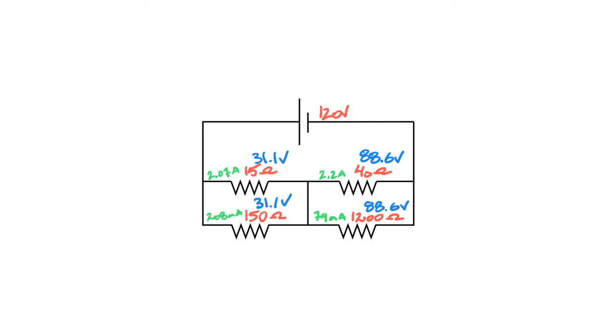So there you go, I've got the math done for you. 31 volts divided by 15 gave us roughly 2.07 amps. 88.6 divided by 40 gave us 2.2 amps. 88.6 divided by 1200 gave us 74 milliamps, and 31.1 divided by 150 gives us 208 milliamps.